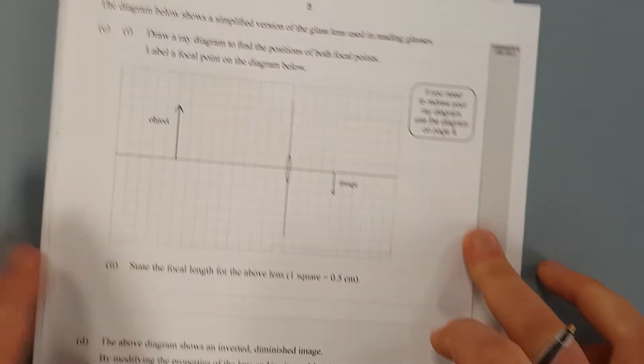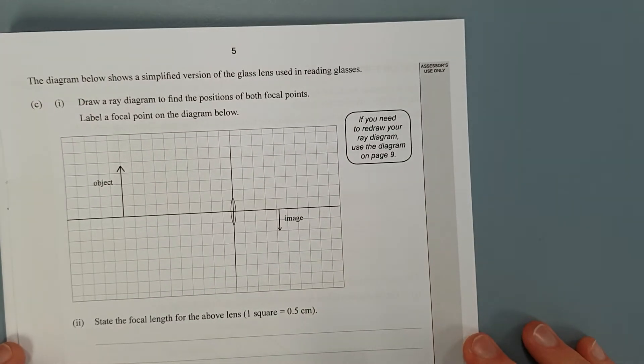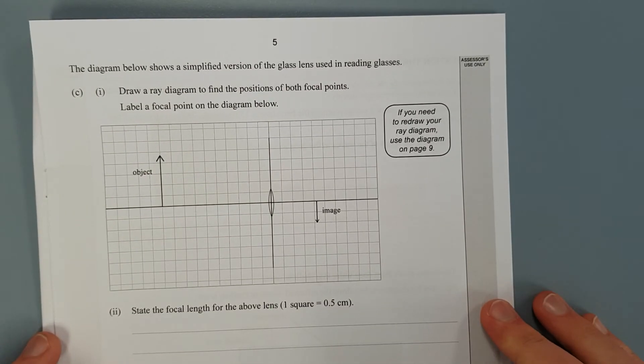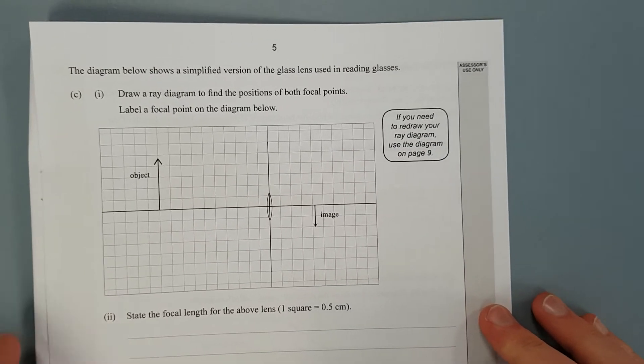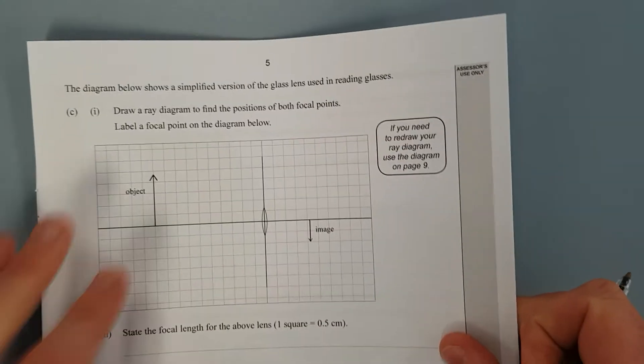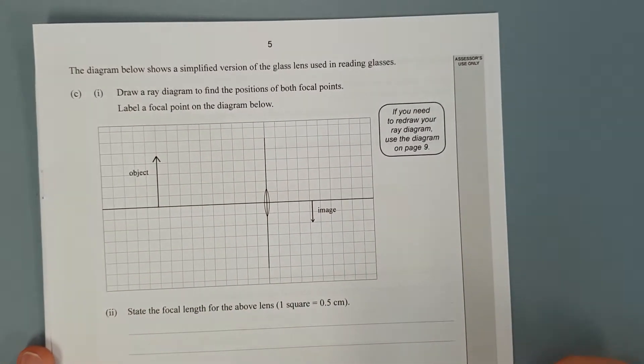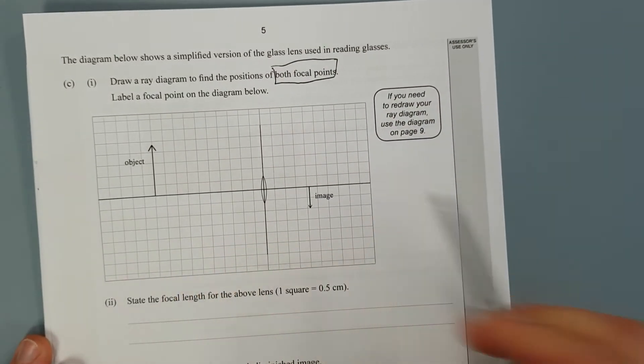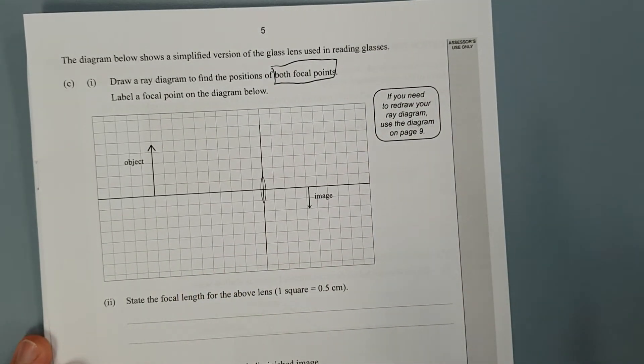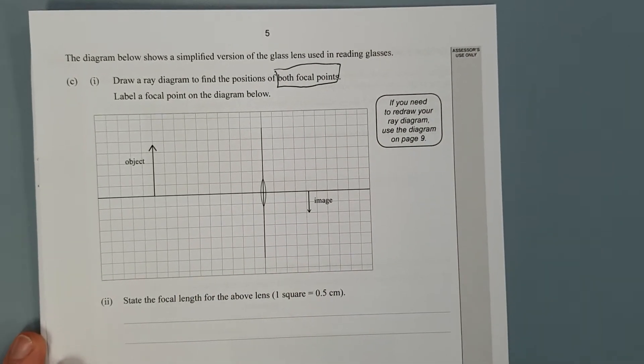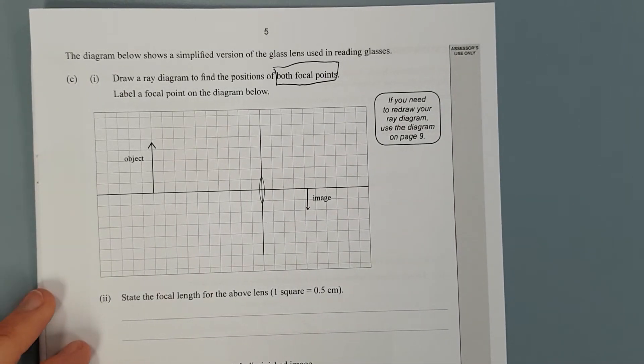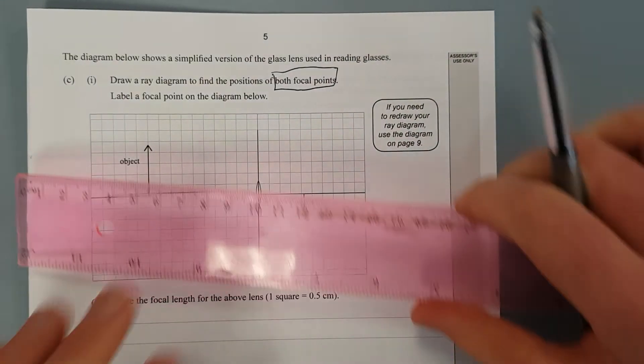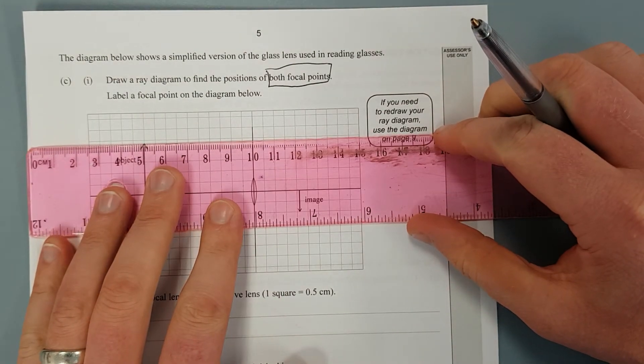Next question. I'm going to flip this around. On the diagram below, it shows a simplified version of glass lens used in reading glasses. Draw the ray diagram to find the positions of both focal points. Both focal points. Label a focal point on the diagram below. It's interesting. It's a contradicting statement, but whatever.